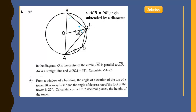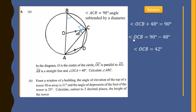Since these two angles sum to 90 degrees, we can find angle OCA. This angle will be 90 minus 48, which simplifies to 42 degrees. So angle OCA is 42 degrees.